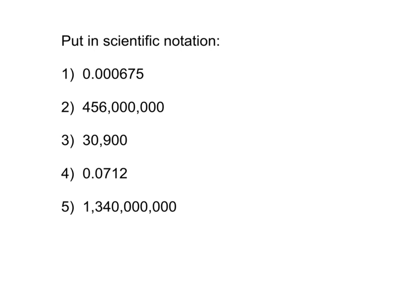In scientific notation we want one non-zero digit to the left of the decimal place. So for number one, that digit will be a six. So we'll have six point seven five times ten, and to figure out what the exponent is, we determine how many places we need to move the decimal in order to get it to be right behind the six.